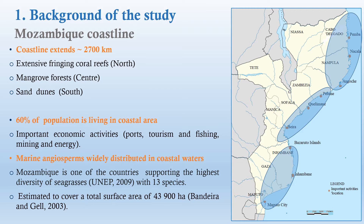Seagrass, a marine angiosperm widely distributed in both tropical and temperate coastal waters, creates one of the most productive aquatic ecosystems on earth. Mozambique is one of the countries supporting the highest diversity of seagrasses, with 13 species found along the entire coast, with extensive beds occurring in sand and limestone areas, estimated to cover a total surface of 43,900 hectares.